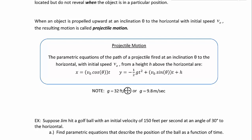Here are our formulas for projectile motion. The parametric equations of the path of a projectile fired at an inclination theta to the horizontal with initial speed v sub 0 from a height h above the horizontal are: x equals v sub 0 times cosine theta times t, and y equals negative one half g t squared plus v sub 0 sine theta times t plus h.